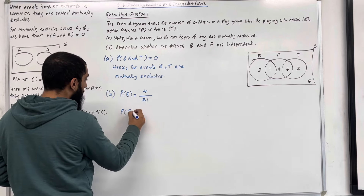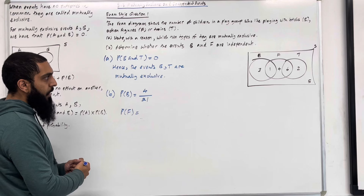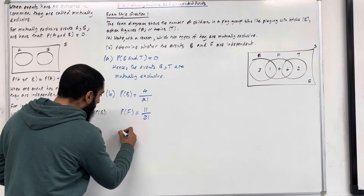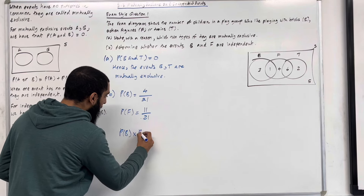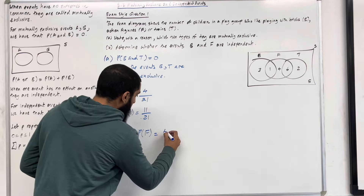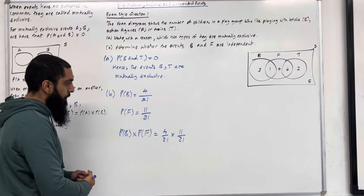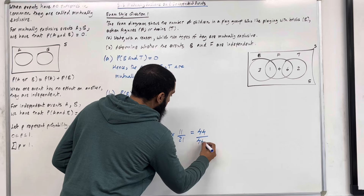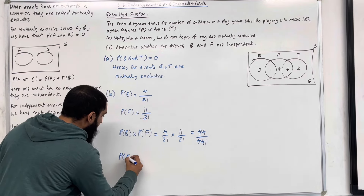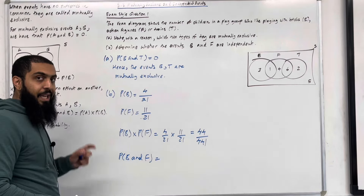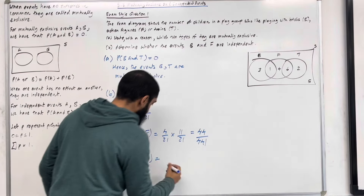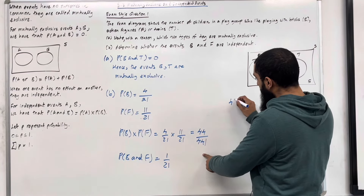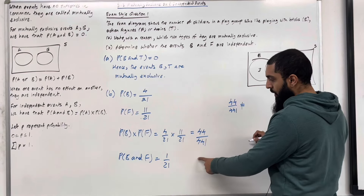Now let's have a look at the probability of F. Inside circle F, we have 1, 4 and 6. So 1 plus 4 plus 6 is 11, giving probability of F equal to 11 out of 21. Now I want to calculate probability of B multiplied by probability of F. So we have 4 over 21 multiplied by 11 over 21, which gives 44 over 441. The probability of B and F — that is, the intersection of B and F — is 1 out of 21.